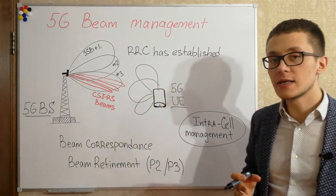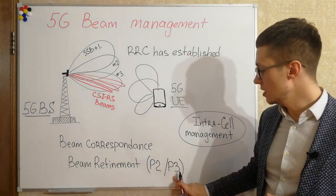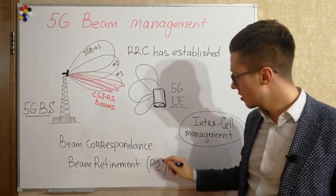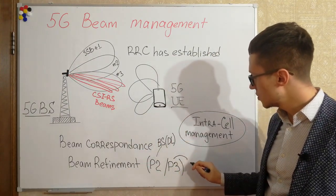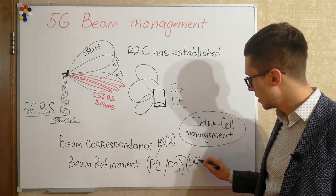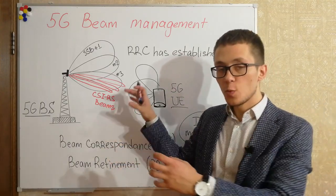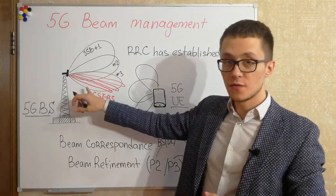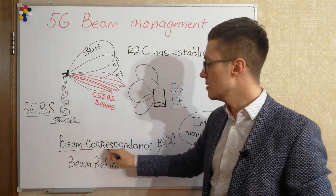In 3GPP, beam refinement is divided into two procedures: P2 and P3. P2 procedure refers to beam refinement from the base station downlink side, and P3 refers to the user equipment side — the uplink direction. When we have optimal connection, with the right beam directions in uplink and downlink, we can say that there is beam correspondence.